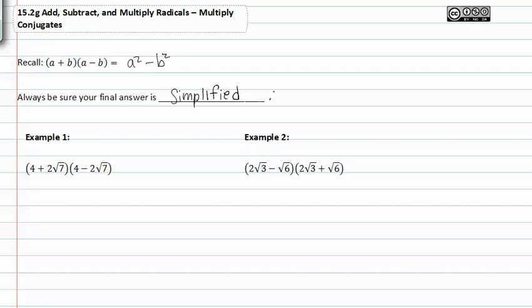In example one, we're going to use the whole concept of multiplying by conjugates and recalling that the two middle terms will add to zero simply because we have identical binomials, except for the fact that the last terms are opposites of each other. One's positive and one's negative. Because of this, we can square the first terms or multiply those first terms together to get sixteen.